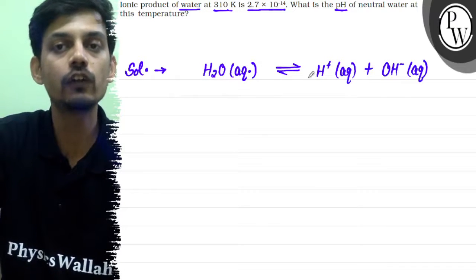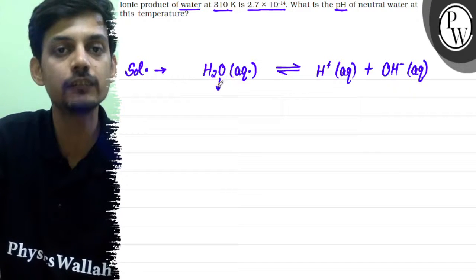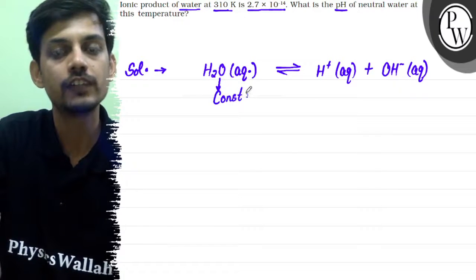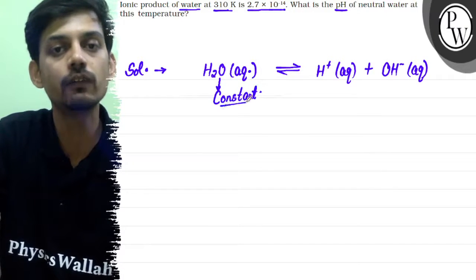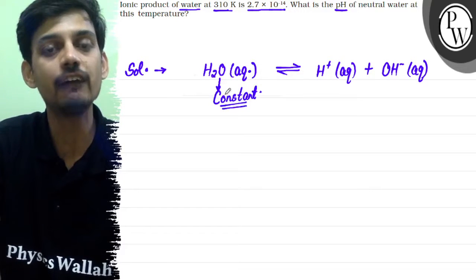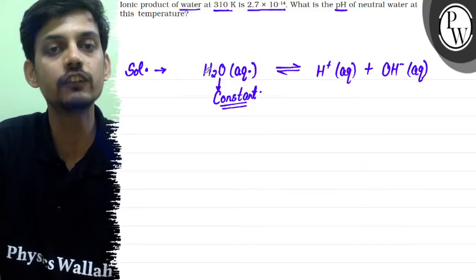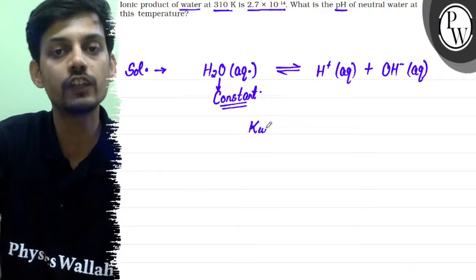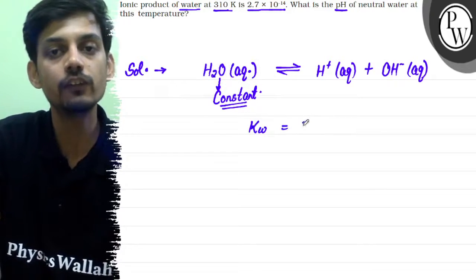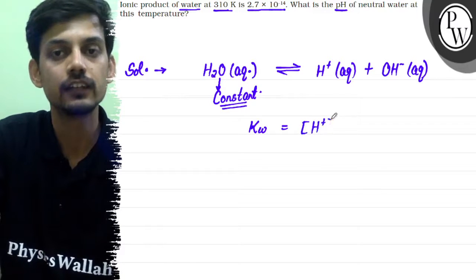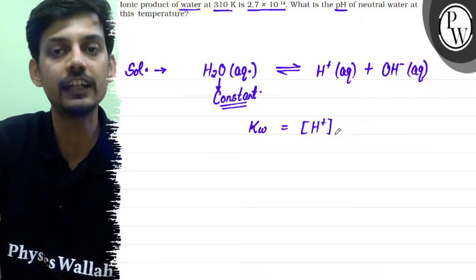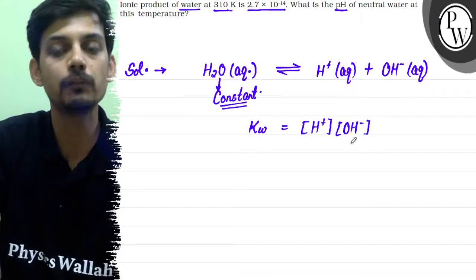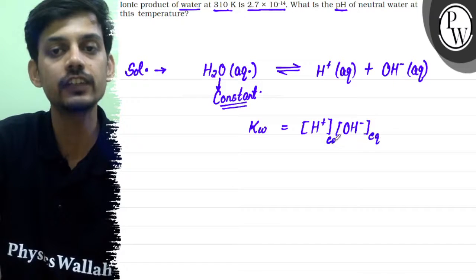Since H2O concentration is in excess, we assume it to be constant. Water ionizes partially, so most of the water remains unionized. The concentration of H2O can be assumed to be constant. That's why the ionic product of water kw involves only the ions - H+ concentration at equilibrium and OH- concentration at equilibrium. This equation is the ionic product of water.